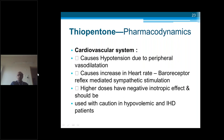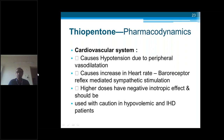Cardiovascular system: thiopentone causes hypotension due to peripheral vasodilation and a reflex increase in heart rate due to baroreceptor-mediated sympathetic stimulation. Higher doses have a negative inotropic effect. It should be used cautiously in hypovolemic and ischemic heart disease patients — in emergency cases where patients are dehydrated or have heart disease, we should not give thiopentone for induction, as the negative inotropic effect can cause sudden hypotension and risk of cardiac arrest.